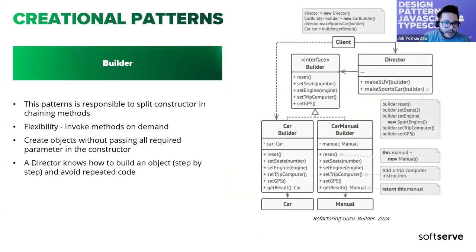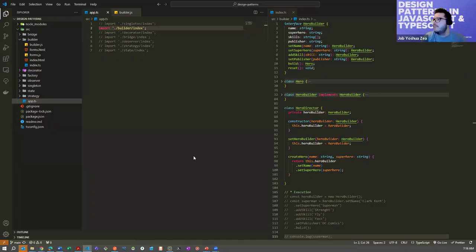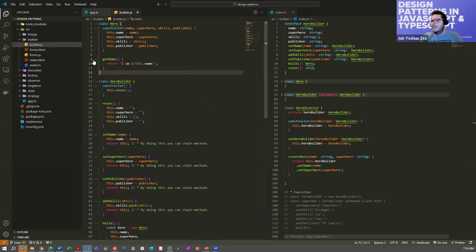Let's continue with the Builder, another creational pattern. This is one of my favorite patterns. It helps us create objects step by step and offers flexibility in how we create them. I'm going to share my Visual Studio so you can see what I'm talking about. Let's start — it's a Builder pattern, it's creational, and we need to create objects.